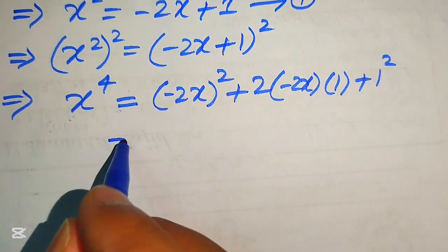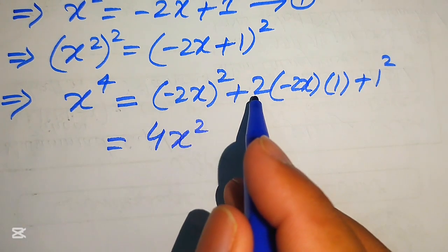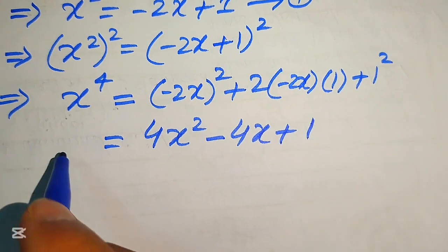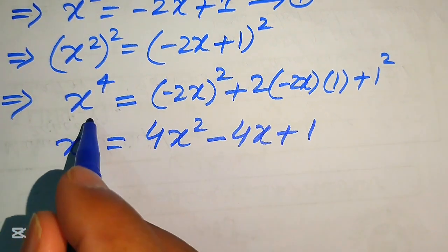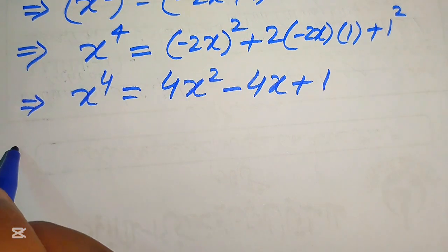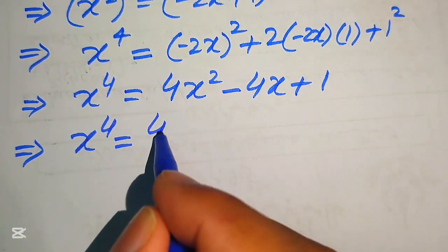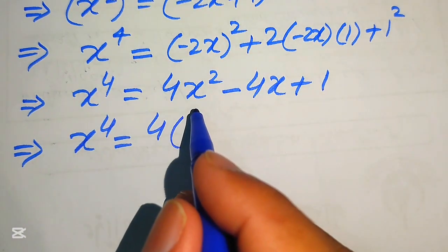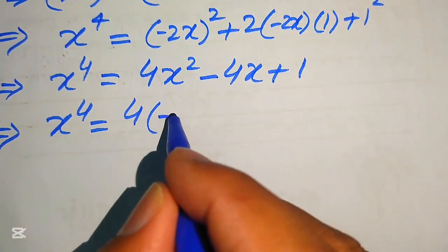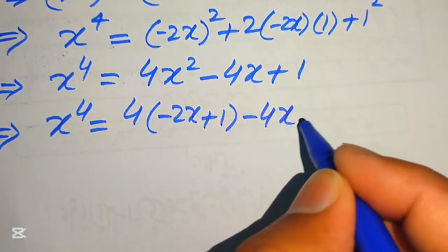Simplifying: minus 2 squared equals positive 4, so we have 4x squared, then 2 times 2 gives minus 4x, and 1 squared equals 1. So x to the power of 4 equals 4x squared minus 4x plus 1. Now we substitute Equation 1, replacing x squared with minus 2x plus 1, giving 4 times of minus 2x plus 1 minus 4x plus 1.